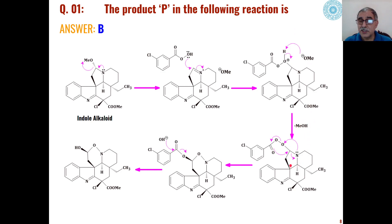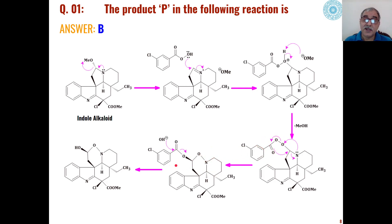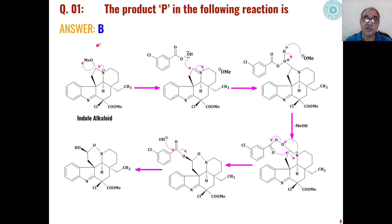After methanol is removed, the peracid undergoes rearrangement with addition of the oxygen to the substrate — the five-membered ring is converted into a six-membered ring with addition of oxygen. Then, under basic conditions, the carboxylic acid part is removed, giving the product which is choice B.